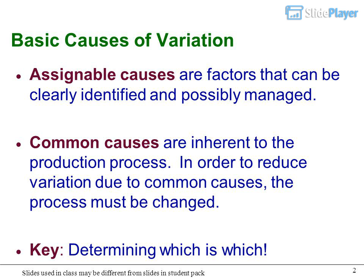Basic causes of variation: Assignable causes are factors that can be clearly identified and possibly managed. Common causes are inherent to the production process. In order to reduce variation due to common causes, the process must be changed. Key: determining which is which.